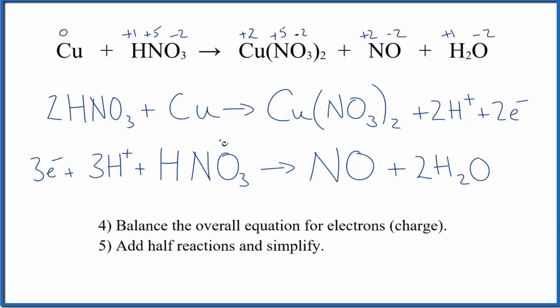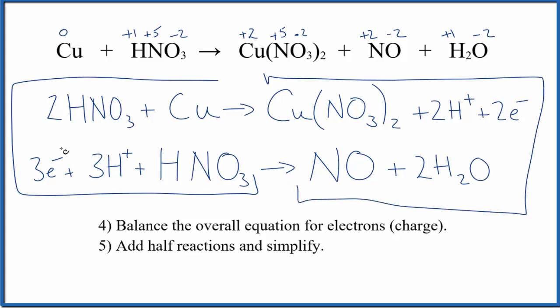Finally, to write the redox reaction for Cu plus HNO₃, we need to balance the overall equations for charge, and then simplify the half-reactions. Think of it this way: these are the reactants here, and these are the products. If we look at it, we have three electrons here and only two here. So that's not balanced.